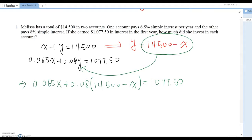Now, I count decimal digits. You see, one, two, three, one, two, one, two. So this is the biggest, largest decimal digit. So we move everything to three digits. Then this becomes 65X plus 80 times 14,500 minus X equal to 1077.50 dollar.